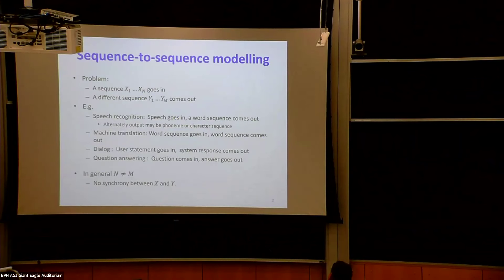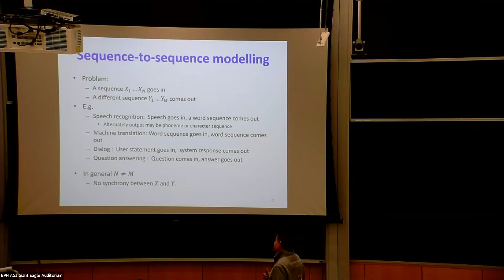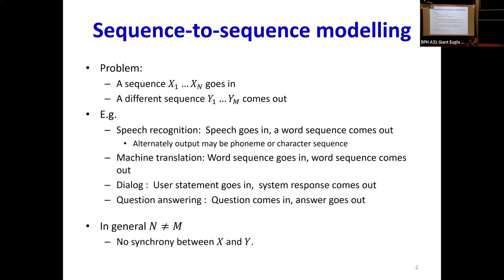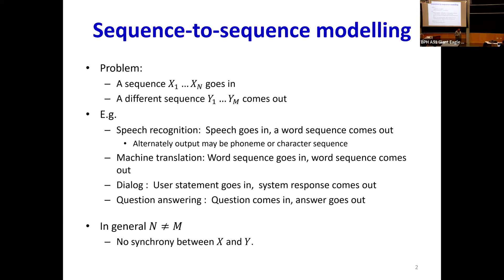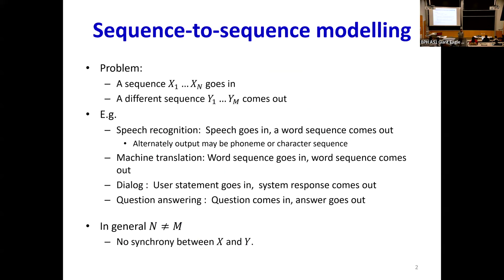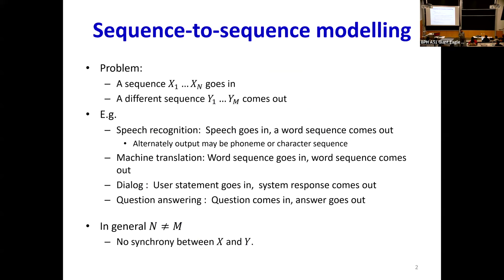This is a problem where some sequence of inputs goes in and a different sequence comes out. So it's a time series problem. We started off saying recurrent neural networks were appropriate for time series. Classic problems include speech recognition, where what goes in is a sequence of speech vectors and what comes out is a sequence of words. Or machine translation, where what goes in is a sequence of words and what comes out is a sequence of words. Or in a dialogue system where what goes in and what comes out may not be related at all.